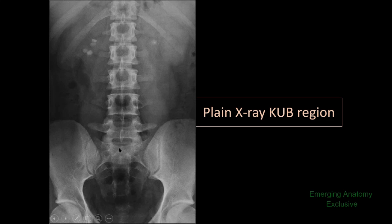Now, this image is for the ala of the sacrum. Here is the sacral promontory. And here is another ala of the sacrum on the other side. Here is the sacroiliac joint. This bone is the ilium — one of the bones of the hip bone.